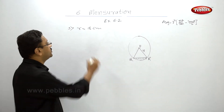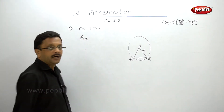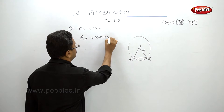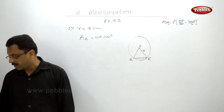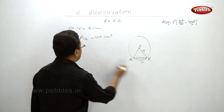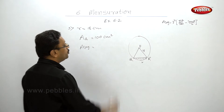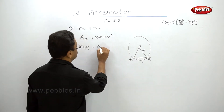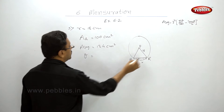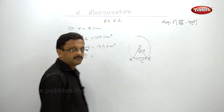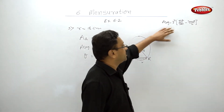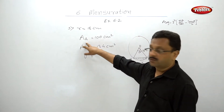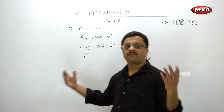In the third example, radius is given as 18 centimeters. The area of triangle PQR is given, and the area of segment QXR is given as 13.4 centimeters square. You have to find the central angle theta — a very easy example. Just substitute: r is known, area of triangle is known, area of segment is known, find theta.